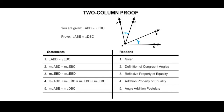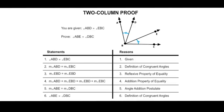We've been asked to prove that angle ABE is congruent to angle DBC, and we've shown that the measure of angle ABE is equal to the measure of angle DBC. So statement six is that angle ABE is congruent to angle DBC, and the reason is the definition of congruent angles. And that is how to write a two-column proof.